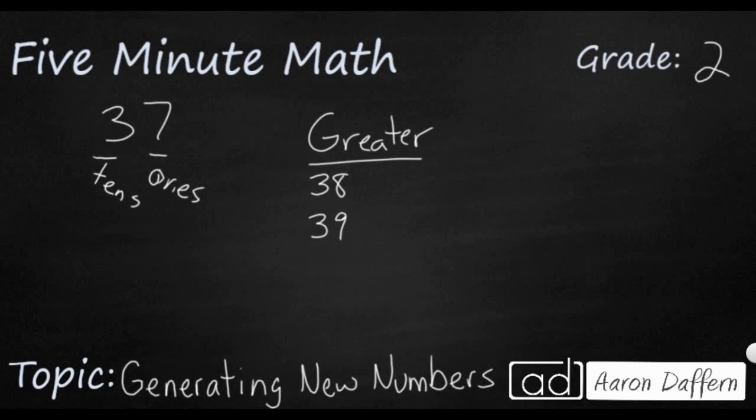If I wanted to see what is less than 37, well we could do the same thing. We'll keep the 3 in the tens place and think about all the digits that are smaller than 7 in the ones place.